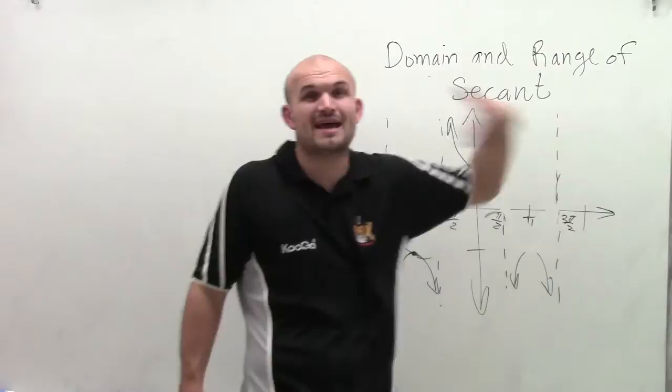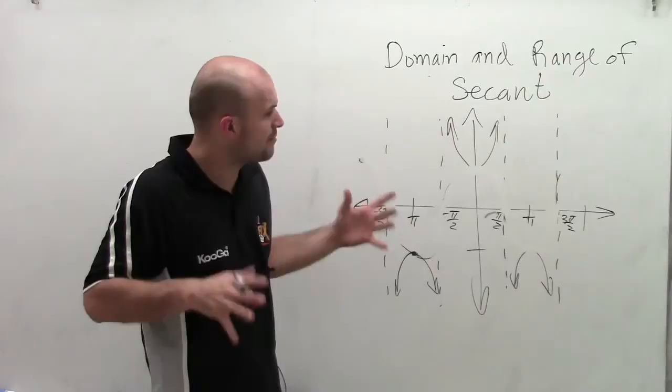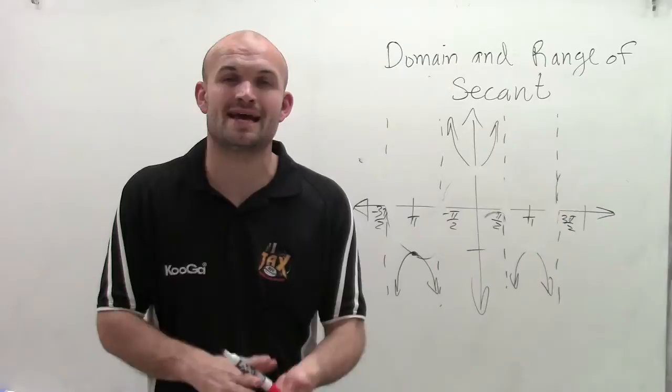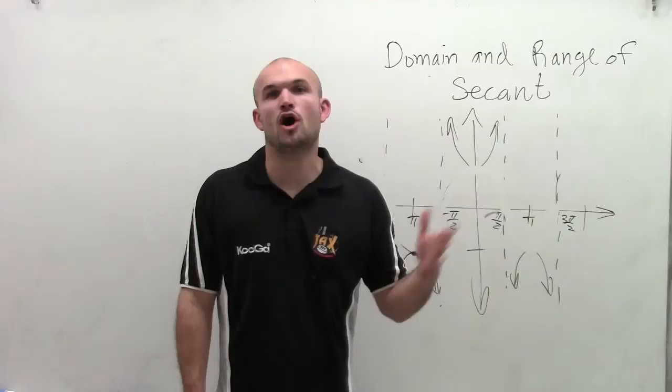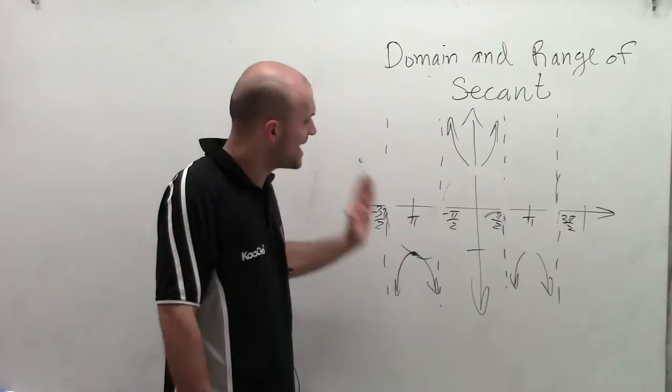So what is going to be our domain? Now remember, the domain is going to be all of the x values that are part of your function that we can evaluate our function for. So rather than trying to think of all the numbers, let's look at all the numbers that we can't evaluate our function for. And the only values that we cannot evaluate our function for in the secant function is where we have vertical asymptotes.